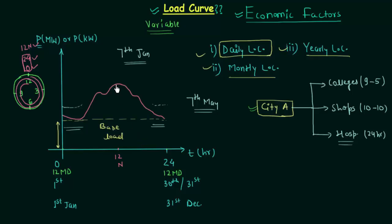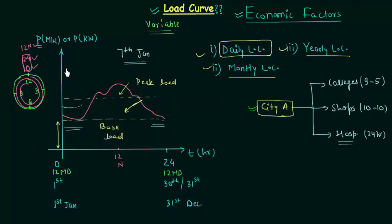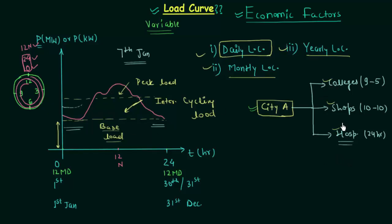We also have the peak load — the maximum amount of load we need to satisfy in 24 hours is known as the peak load. When all loads are operational we have the peak load. And in between the base load and peak load we have the intermediate cycling load. So we can divide the load curve into three parts: base load, intermediate cycling load, and peak load.